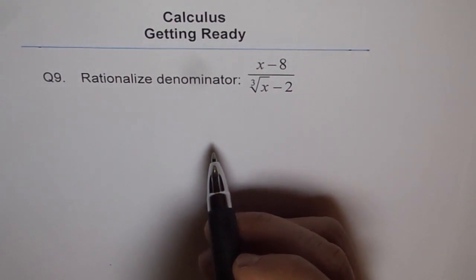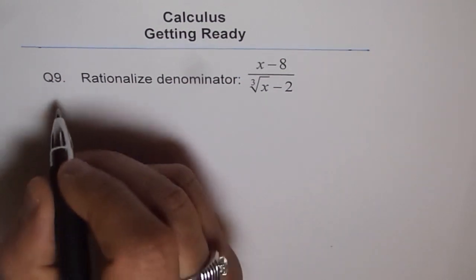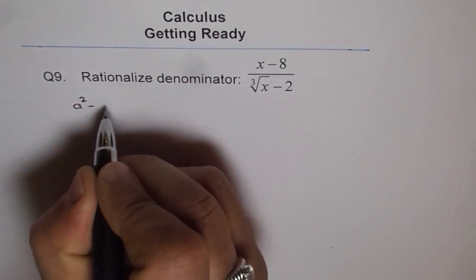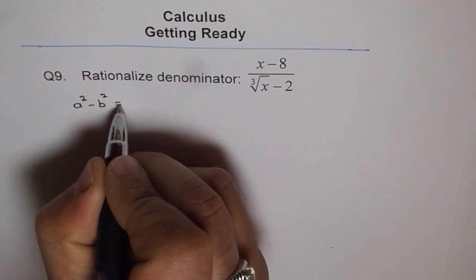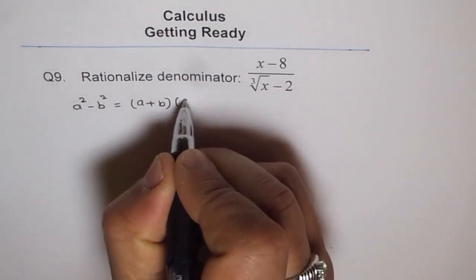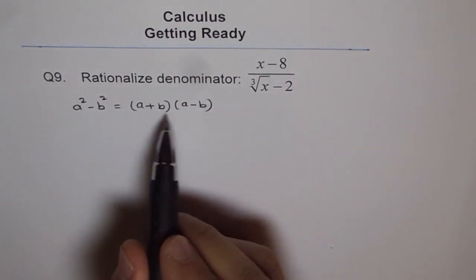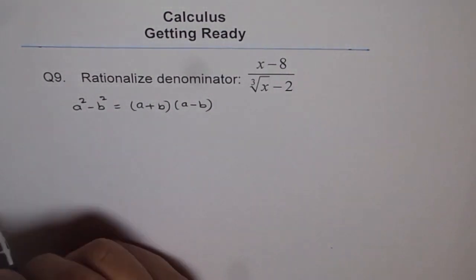Normally, you rationalize with just a square root. You use the formula that a square minus b square equals a plus b times a minus b. In those cases, you rationalize with the conjugate and get the answer.